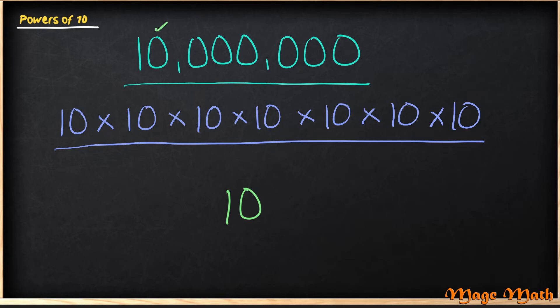It would be much easier if I were to write my 10 and just use an exponent or power of 10. I see I have 1, 2, 3, 4, 5, 6, 7 zeros. So this would be 10 to the power of 7.